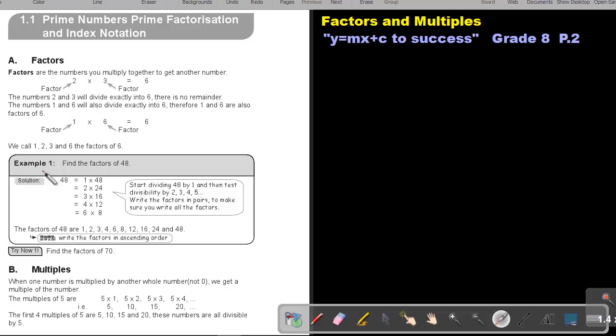Now, let's look at another example. Find the factors of 48. Start dividing 48 by 1 and then test the divisibility by 2, 3, 4, 5, and so forth. Write the factors in pairs to make sure you write all the factors.